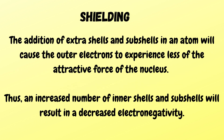The next factor is shielding. The addition of extra shells and sub-shells in an atom will cause the outer electrons to experience less of the attractive force of the nucleus. Thus, an increased number of inner shells and sub-shells will result in a decreased electronegativity.